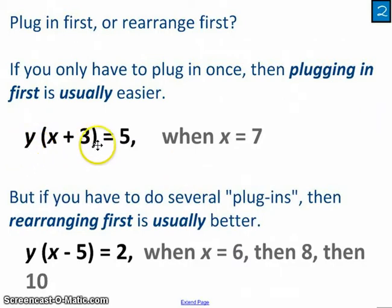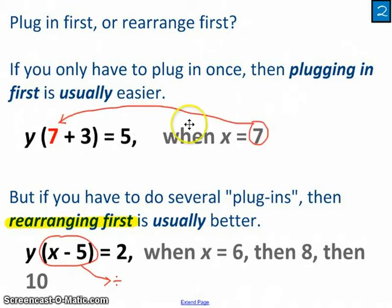Let's say that I was given this equation, and I was told X equals 7. I would do something differently than if I'd been given a similar equation, but I'd been told X might be 6, it might be 8, it might be 10, it might be other things, and I'm going to have to try a number of different X values. If I'm only given one X value, it's just as easy to simply plug that in here. Let's see that: plug that 7 in here in place of X.